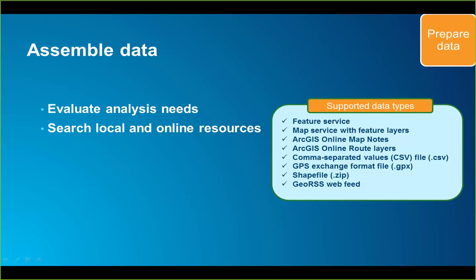For this webinar we're going to use data from two different sources. The first is crime data downloaded from the Regional Municipality of Halifax's Open Data Catalog — specifically recorded assaults over a one-month period in 2013 — which now exists in a text file format. The second data source is from Statistics Canada: census tract information for 2011 downloaded from their Geographic Boundaries web page and clipped to the study area for Halifax.